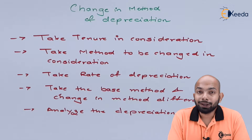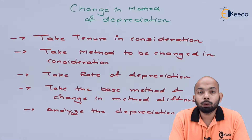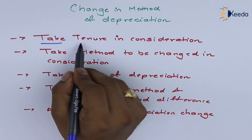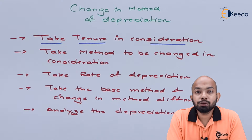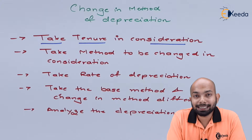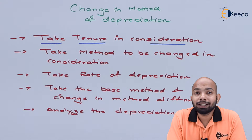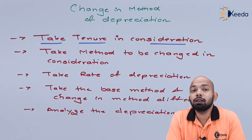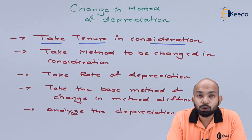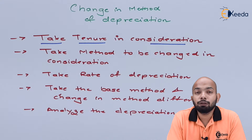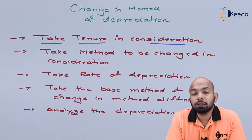The first point refers to taking tenure into consideration. This basically means in what period one specific method has been followed, and after that period which method is supposed to be followed — whether it is supposed to be carried out for the whole useful life or for just a few years after the change in method of depreciation.